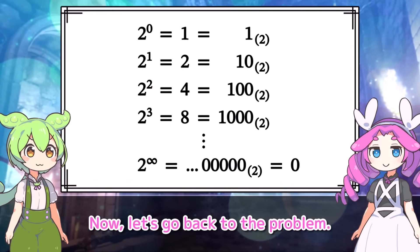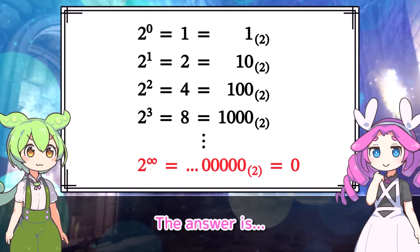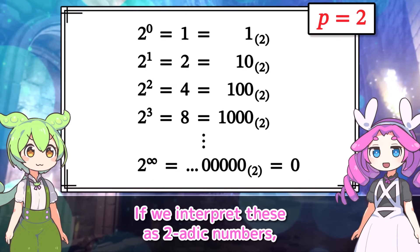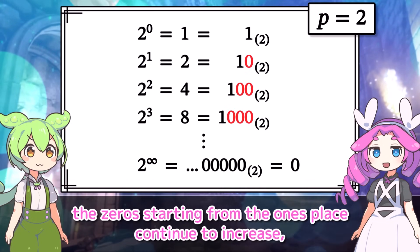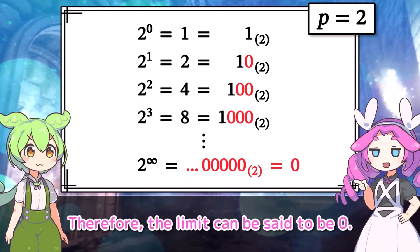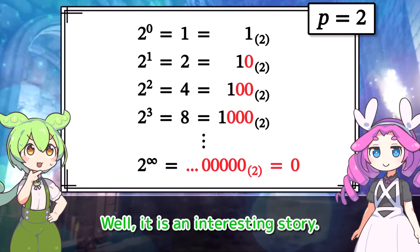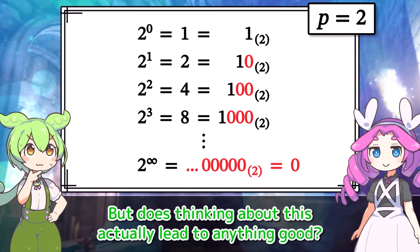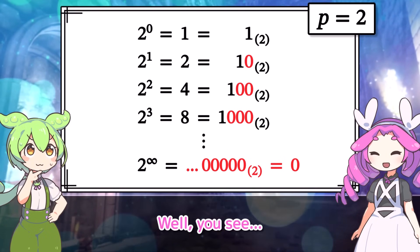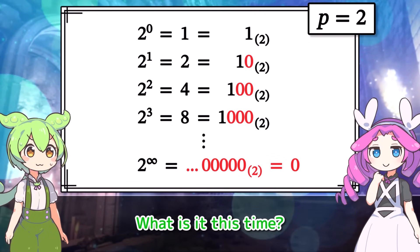Now let's go back to the problem. So, is 2 to the infinity really zero? If we interpret these as 2-adic numbers, the zeros starting from the one's place continue to increase, so the value can be considered to approach zero. Therefore, the limit can be said to be zero. Well, it is an interesting story, but does thinking about this actually lead to anything good? Look at that — in the middle of a discussion, what is it this time?